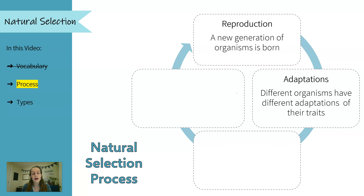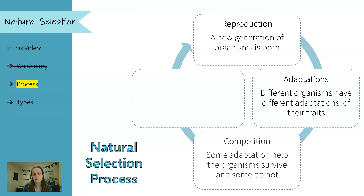Or color — it could be lighter, medium, or dark. So all within the new generation of organisms, they're all slightly different. And some of these organisms, because of the traits they have, are going to be better able to survive.